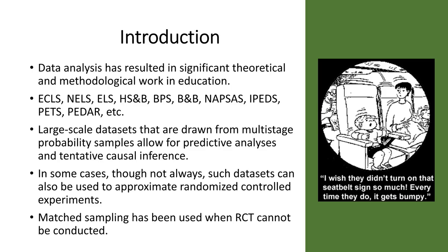NELS, ELS, High School and Beyond, BPS, ECLS, and B&B tend to be long-term data sets — they follow subjects over an extended period of time, sometimes up to 12 years. That type of data set allows us to get at temporal effects, if not true causal effects.